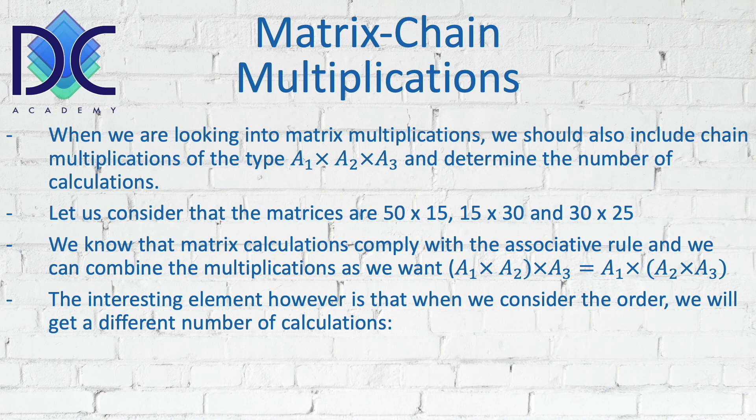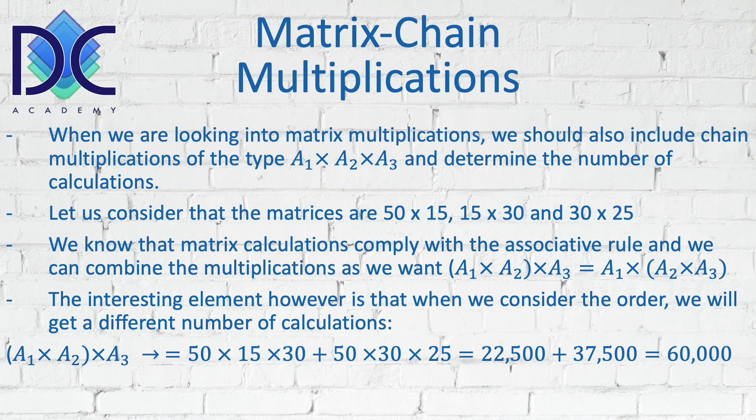Now when we look at the multiplication, we see for the A1 times A2 times A3, we have 50 times 15 times 30 plus 50 times 30 times 25, which gives us a total of 60,000 calculations to multiply A1 with A2 and A3.